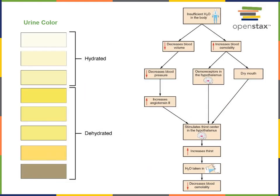In response to dehydration, we typically produce a small volume of relatively concentrated urine, whereas if we are very well hydrated, we produce a larger volume of more dilute urine, helping to maintain water balance. If blood osmolarity becomes too high, osmoreceptors in the hypothalamus stimulate secretion of antidiuretic hormone and also stimulate thirst, prompting increased water intake, while antidiuretic hormone acts in the kidney to produce a smaller volume of more concentrated urine.